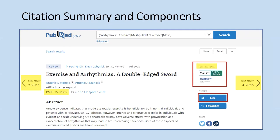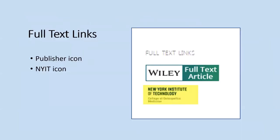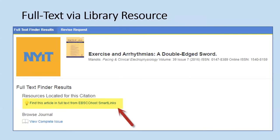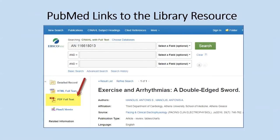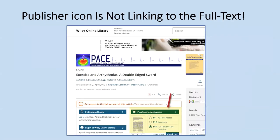Once you've clicked on an article, on the right-hand side there's a box with full-text links. Clicking the full-text links gives you either the publisher link or the New York Institute of Technology link. Click the NYIT link first, as it shows whether we have the article available full-text. In this case, it showed the article available for free under EBSCOhost smart links — click that link to pull up the article. The article was available in CINAHL; just click the PDF link to open it. If you click the publisher link instead, you'll likely be asked to pay, so avoid it unless the icon says 'free.'